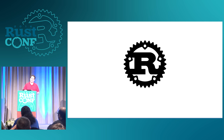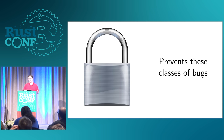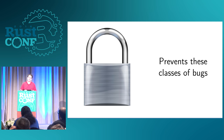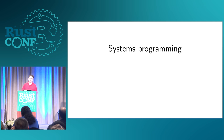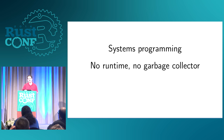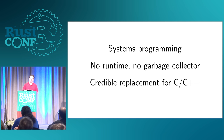The reason I want to try using Rust for this is that it prevents these whole classes of bugs. But in addition to that, it's also a pretty good fit for virtual machines for other reasons. It's a great systems programming language. There's no runtime or garbage collector to get in the way of doing that low-level programming. It's honestly the first language I've seen that's a credible replacement for C and C++ anywhere you could use them.